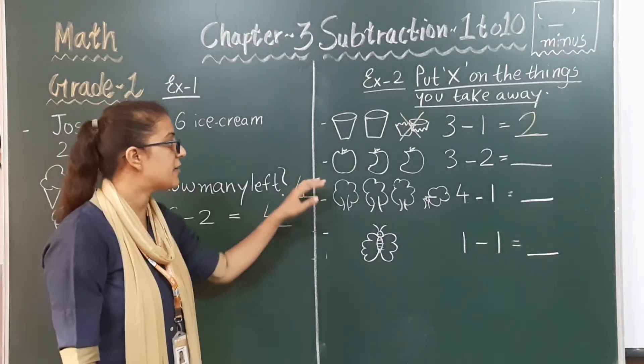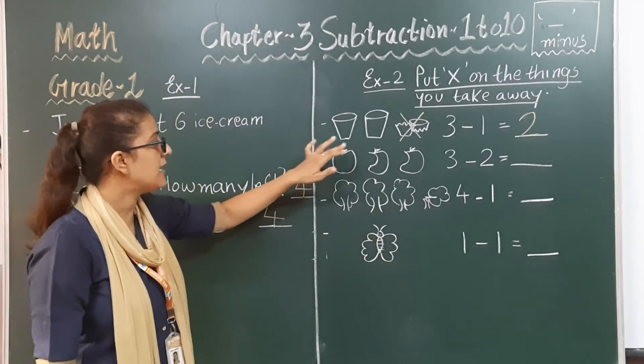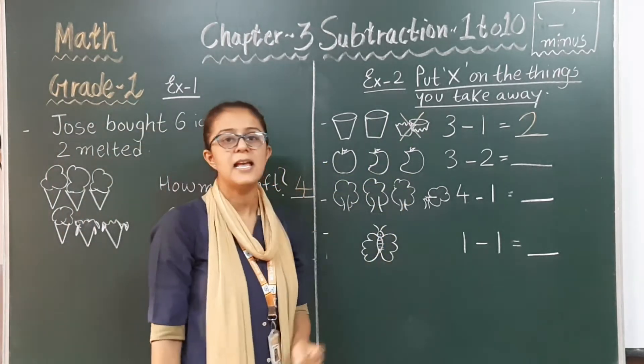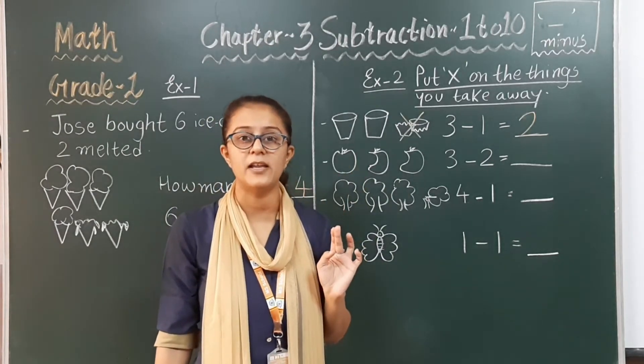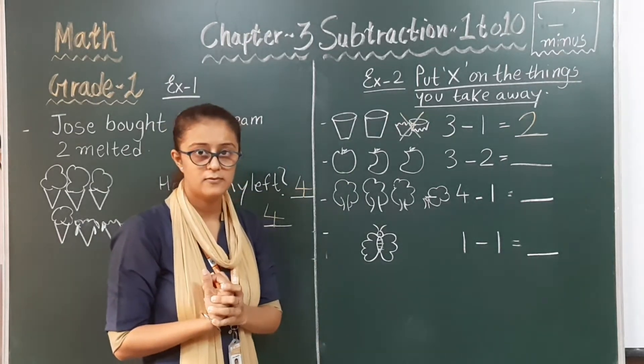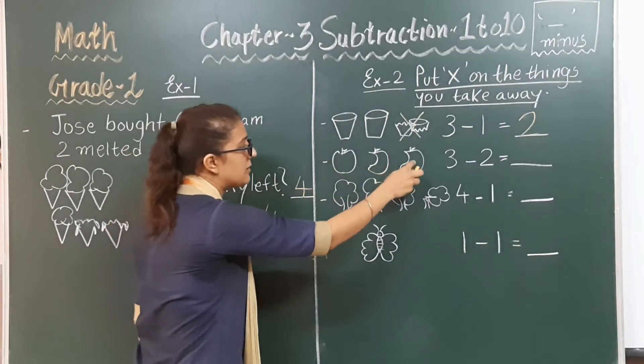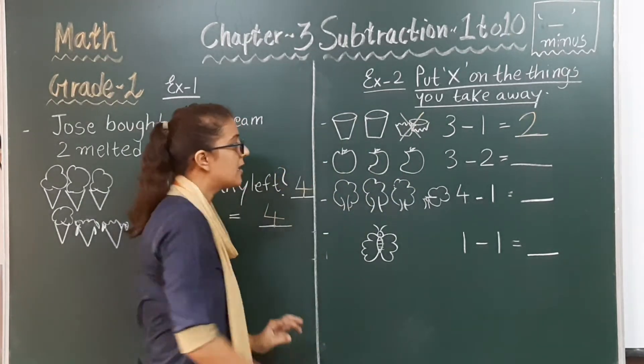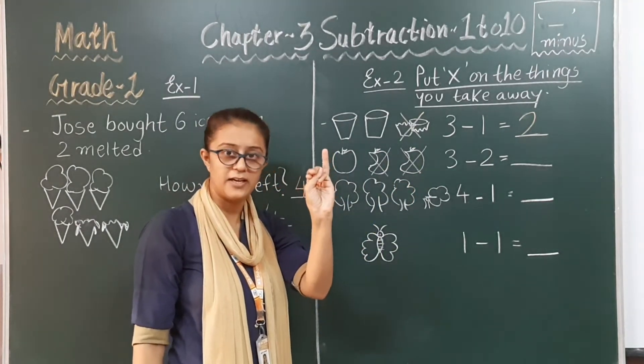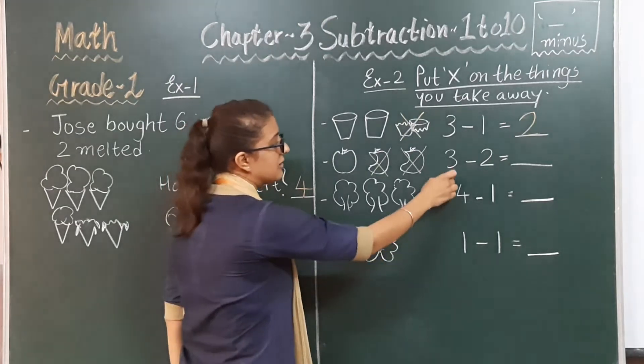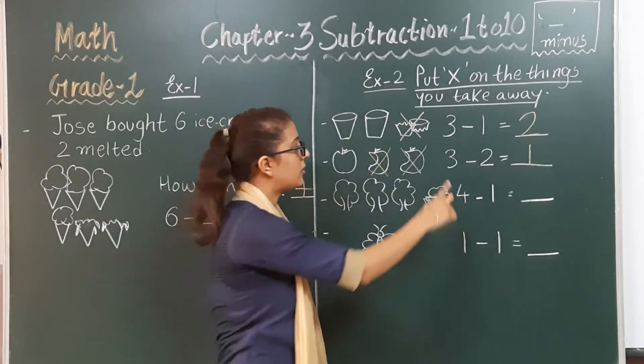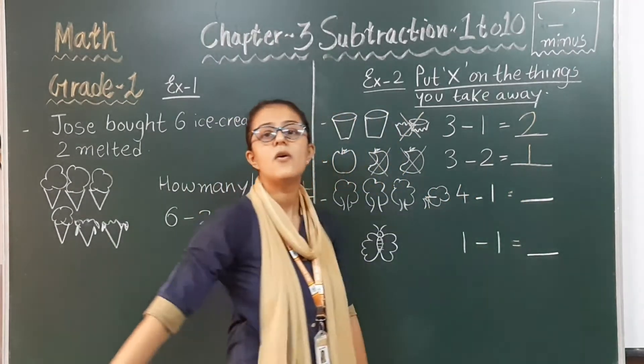Now next. That is a picture of apples. Now one, two, three apples are there. But from that three apples, you can see two apples have been already eaten by someone. So now total how many apples do we have? One, two and three. Total three apples. One and two have been eaten by someone. So only one is left. Three take away two is one. Three minus two is equal to one.